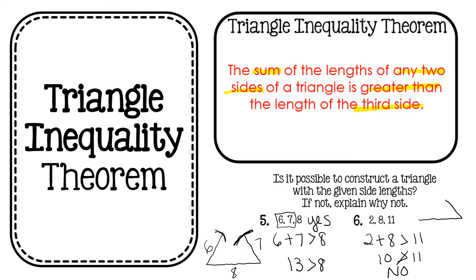this would not construct. So if I had a triangle that I wanted to see if it was constructed, and this side was 2, and this side was 8, and this side was 11, these would not come up and make a full triangle.